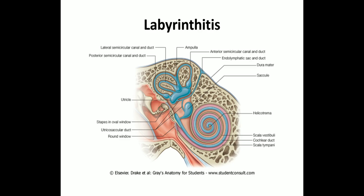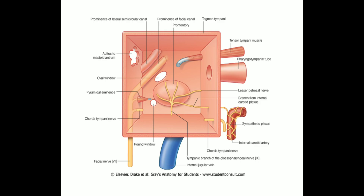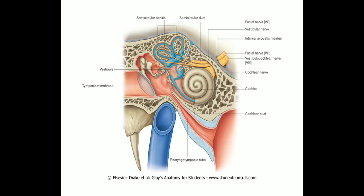The second intratemporal complication of otitis media is labyrinthitis — when the disease process extends beyond the middle ear and reaches the inner ear. Labyrinthitis is broadly classified into circumscribed and diffuse labyrinthitis. Circumscribed labyrinthitis is localized and also called labyrinthine fistula. In the diagram, we can clearly appreciate the prominence of the lateral semicircular canal. Extension of the disease process to the lateral semicircular canal causes erosion of its bony capsule, leading to a fistula — the commonest site being the lateral semicircular canal. This creates a communication between the middle ear and the inner ear, and the membranous labyrinth becomes sensitive to pressure changes.